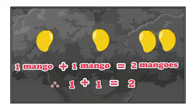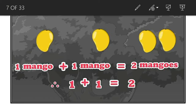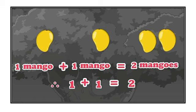Now here you can see the sign of addition is plus. Very good. And two is called the sum. So one plus one is equal to two is an addition sentence, and is read as one plus one is equal to two.